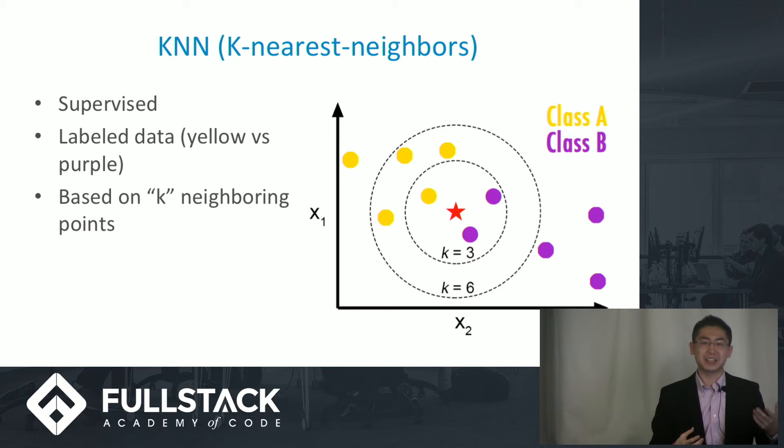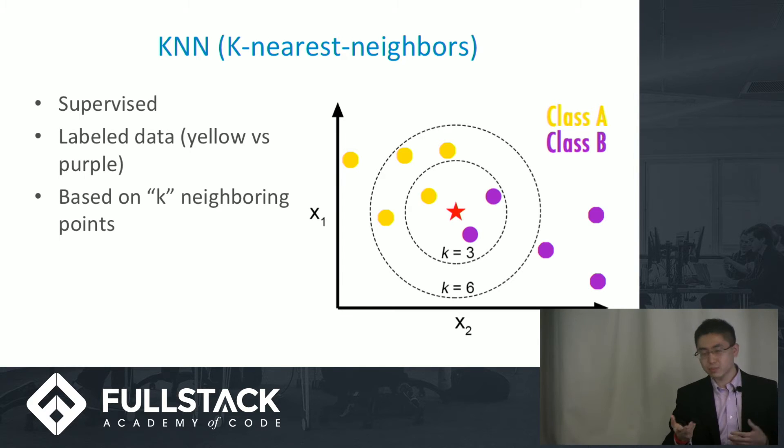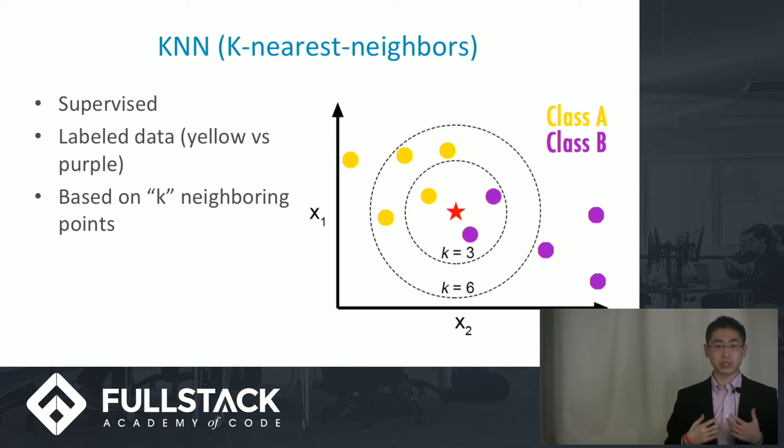K-nearest neighbors is basically the idea that you extract the identity of a particular point or a particular piece of datum using its nearest neighbors, or the closest other points that look like it. If we take a look at a K of three, you basically have two purple points and one yellow point, rendering it as a purple element.